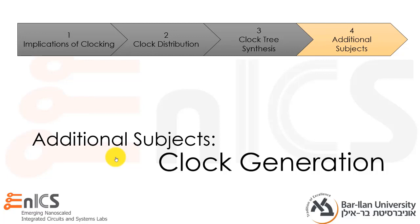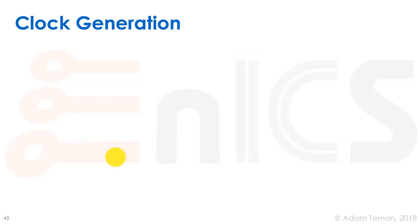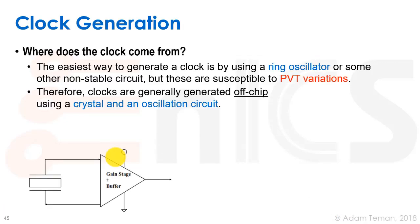As an addition, we'll discuss clock generation. Where does the clock actually come from? The easiest way to generate a clock is by using a ring oscillator. If we take a bunch of inverters, an odd number like three inverters, and connect them back and forth.